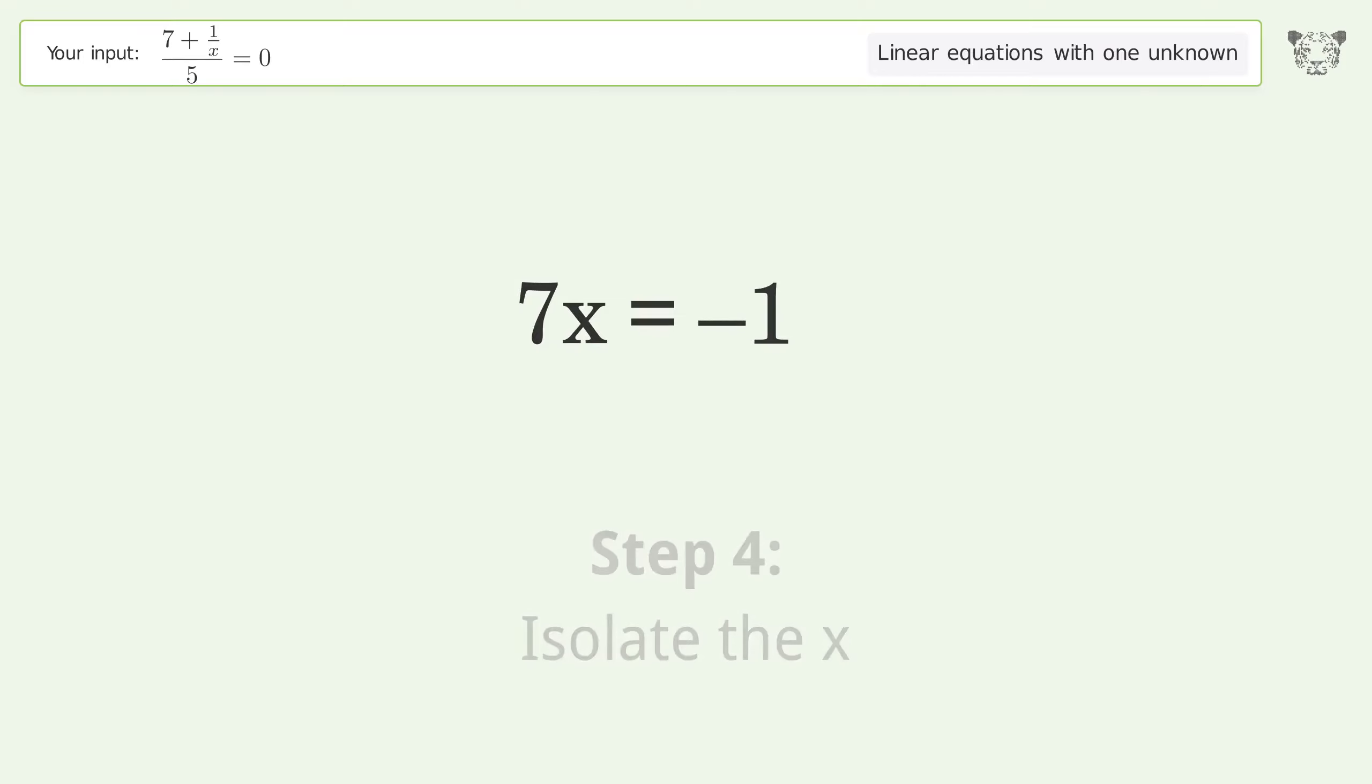Isolate the x. Divide both sides by 7. Simplify the fraction.